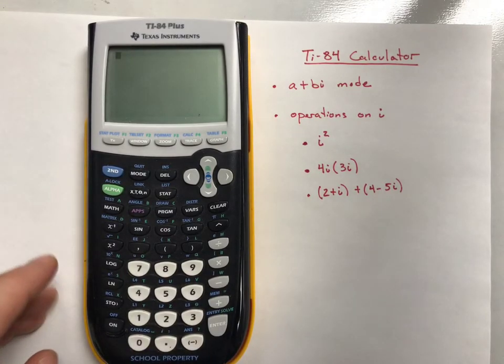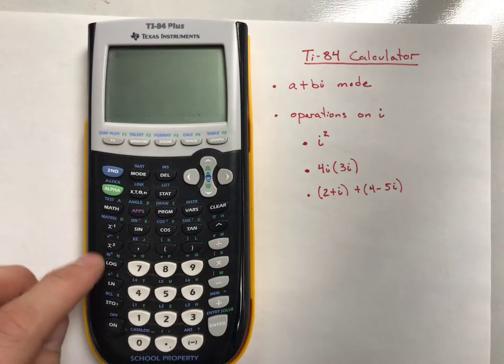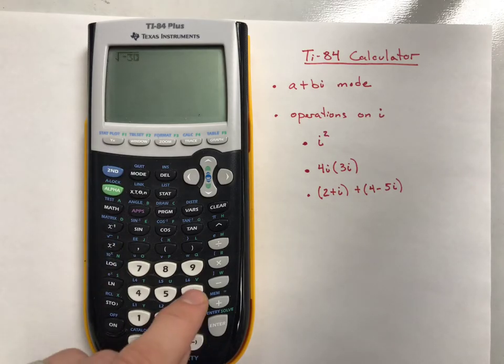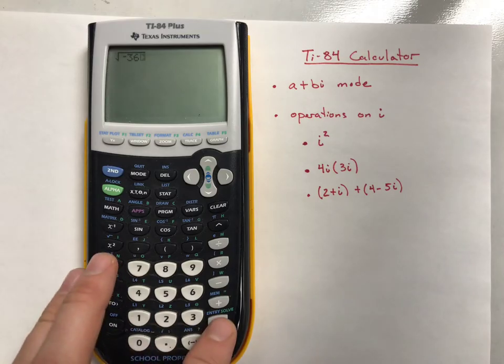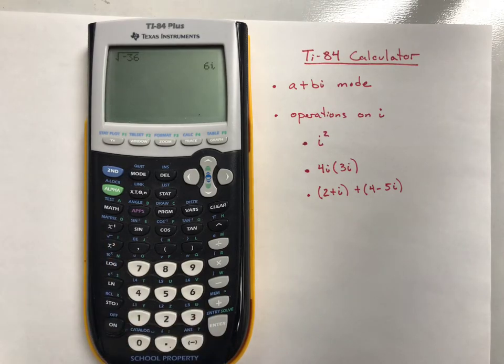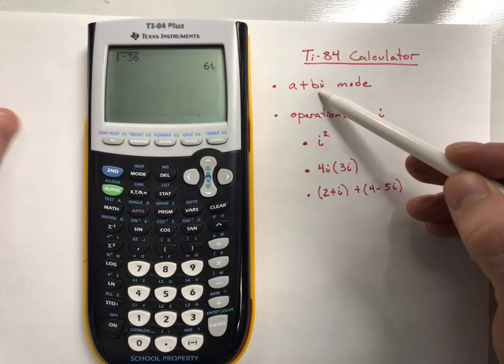Now, the great thing about that is you can do the square root of, say, negative 36. Before, this would have said an error or domain error. In this case, it'll actually calculate and say that equals 6I. So now your calculator is able to do the square root of a negative and put it into our A plus BI or complex mode.